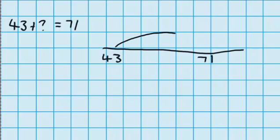Well just like last time, I want to jump up a tidy number, which will take me just past 71. And I know that if I jump up 30, that will take me to 73.